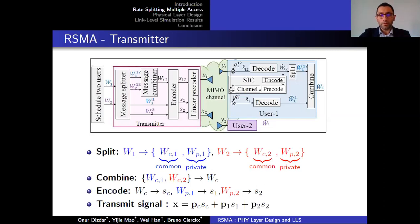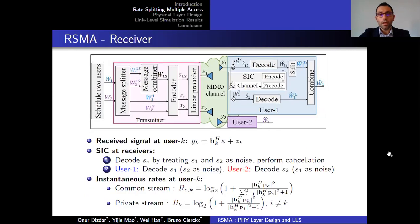RSMA performs rate-splitting at the transmitter by splitting user messages into common and private parts. The common parts are combined into a single common message. The single common message and the private messages are encoded into separate streams, and the transmit signal is obtained by performing precoding over the streams. At the receiver side, users perform SIC by first decoding the common stream and treating the private streams as noise. After cancellation, each user decodes its own private stream by treating the interference from the other user's private streams as noise.